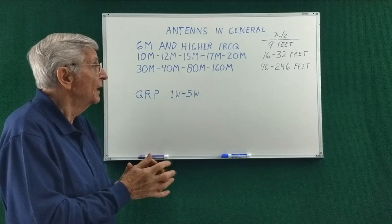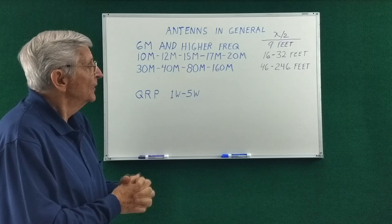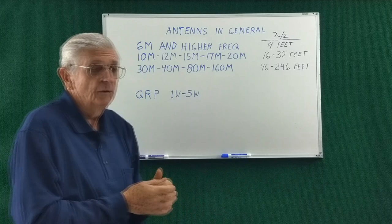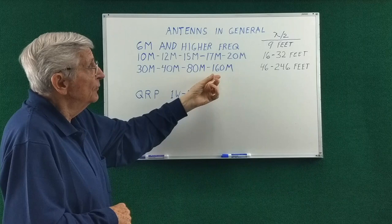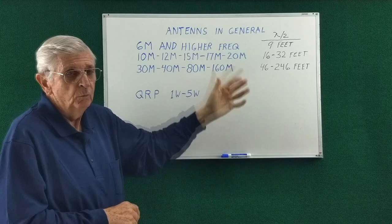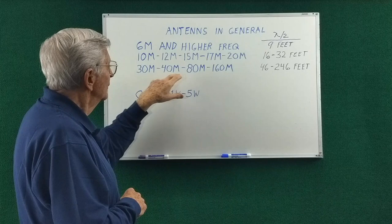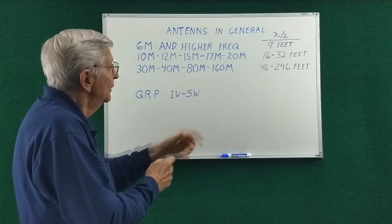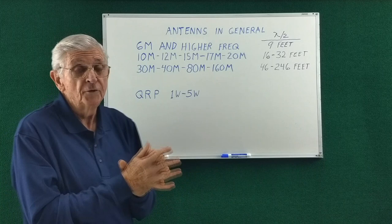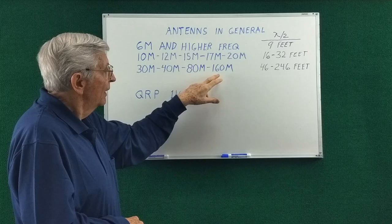Now when we get into the 30 to 160 meter range, we're starting to need some real estate. The 160 meter antenna needs to be 246 feet long. Divide any of these by two if you want the height or the half wavelength in meters. So for a decent takeoff angle, a 160 meter antenna would have to be 250 feet high or more.